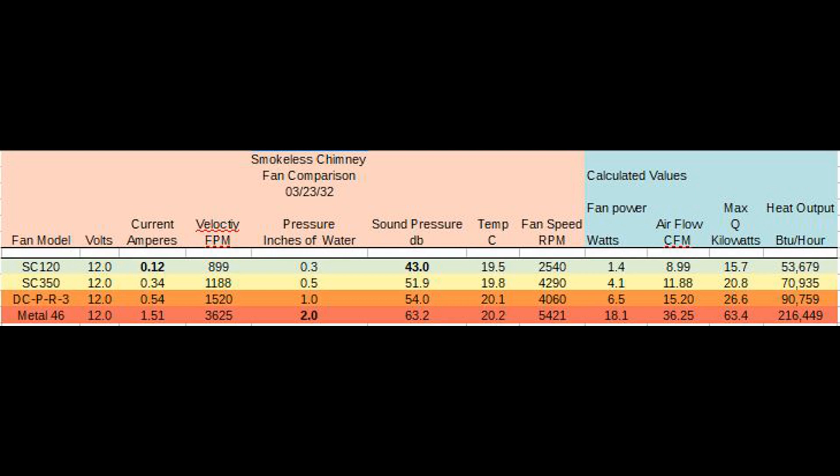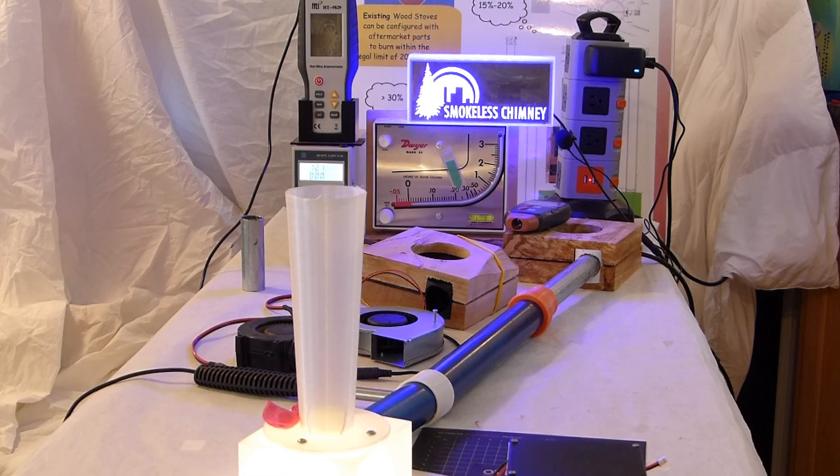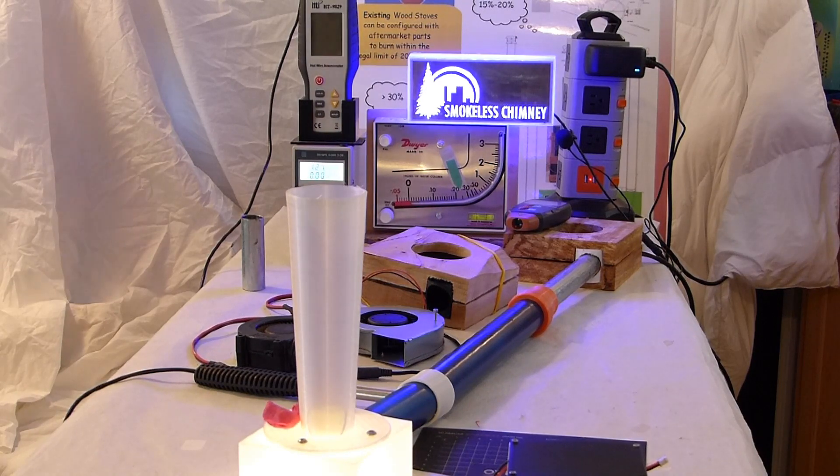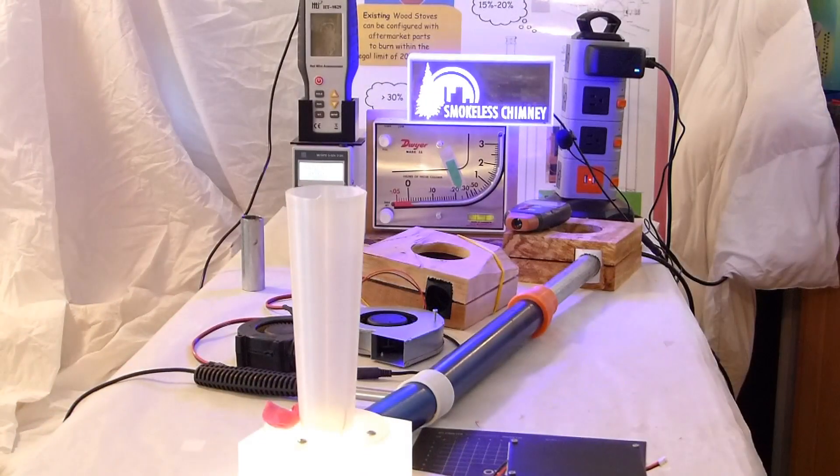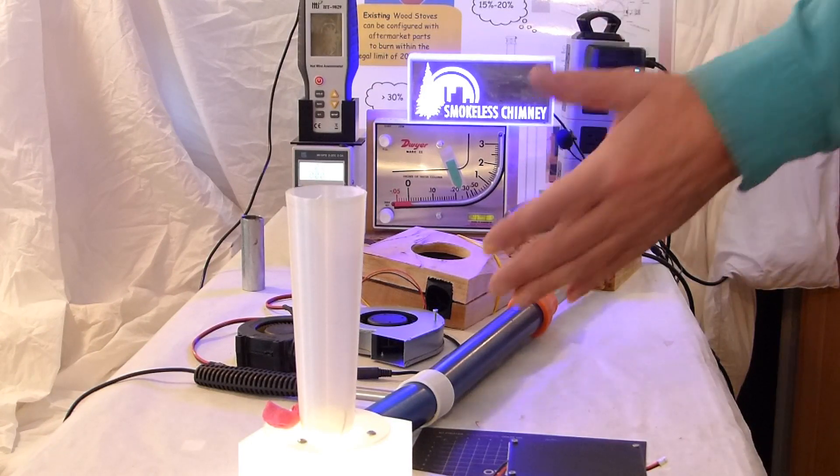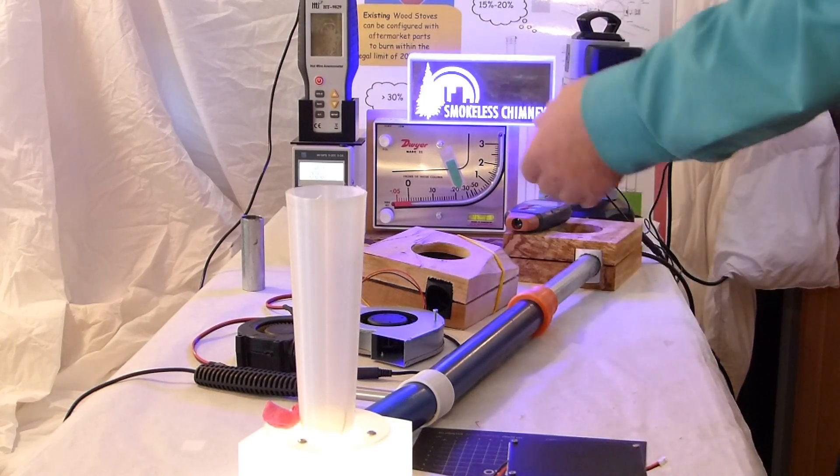This is our setup for testing for volumetric flow rate. We have the hotwire anemometer, the ball anemometer, RPM meter, and a laminar flow tube.